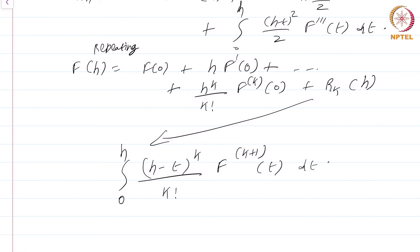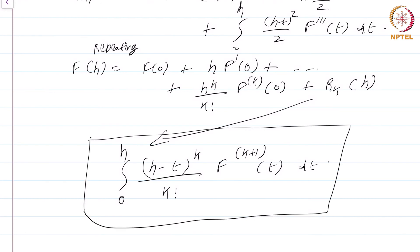Now, you might ask whether this computation — while I personally find it beautiful — is worth the effort given the messy algebra and the simple mistakes I made. The key advantage of this integral form is that there is no unknown intermediate point between 0 and h involved in the remainder term, unlike the Lagrange form.